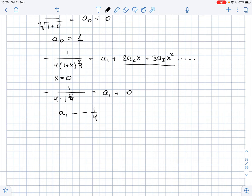Now again, we differentiate the equation on both sides. We get that 5 over 16 times 1 plus x to the power of 9 over 4 equals 2a2 plus 6a3x and so on.